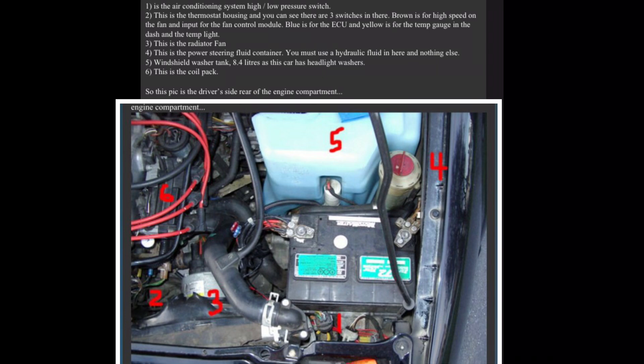Three, this is the radiator fan. Four, this is the power steering fluid container. You must use a hydraulic fluid in here and nothing else. Five, windshield washer tank, 8.4 liters as this car has headlight washer. Six, this is the coil pack. So this pick is the driver's side rear of the engine compartment, pick two.